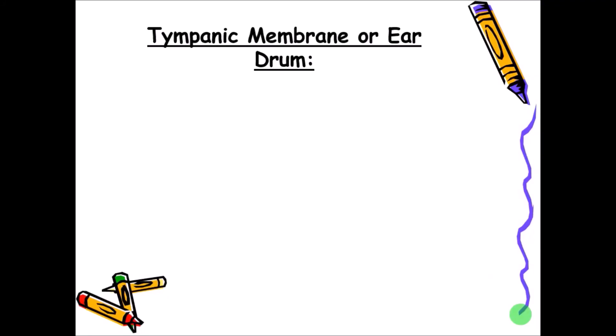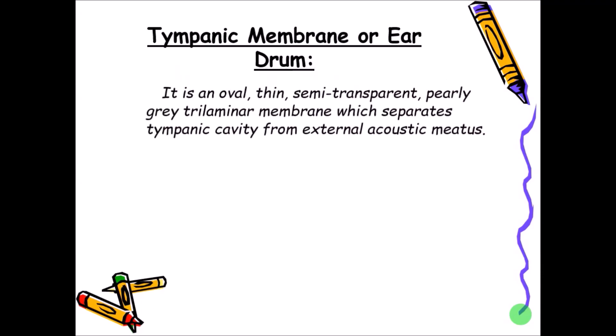The tympanic membrane, also called the eardrum in layman's language, is a very important membrane which separates the external ear from the middle ear. It is an oval, thin, semi-transparent, pearly gray, tri-laminar membrane — tri-laminar because it has three layers — which separates the tympanic cavity, the cavity of the middle ear, from the external acoustic meatus.